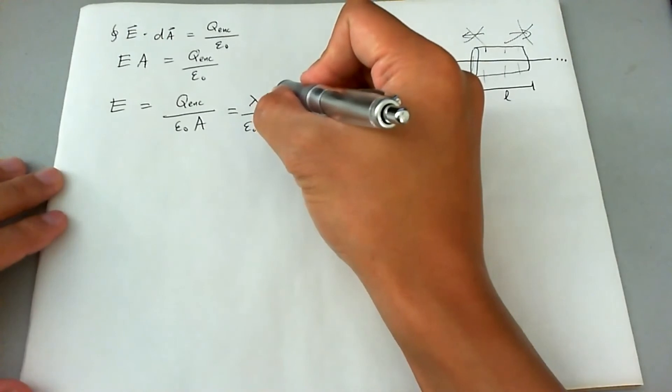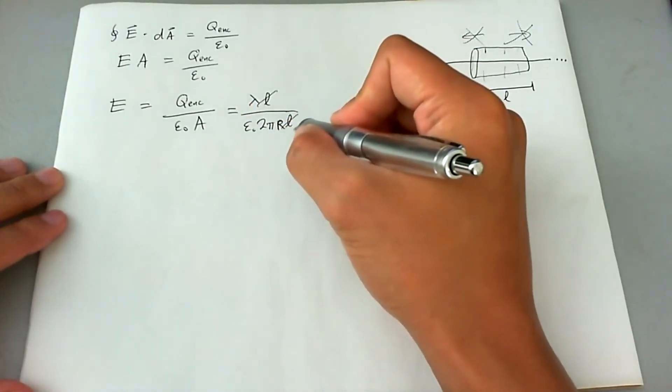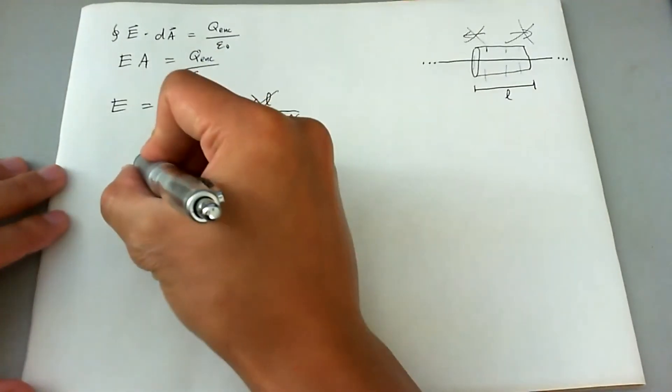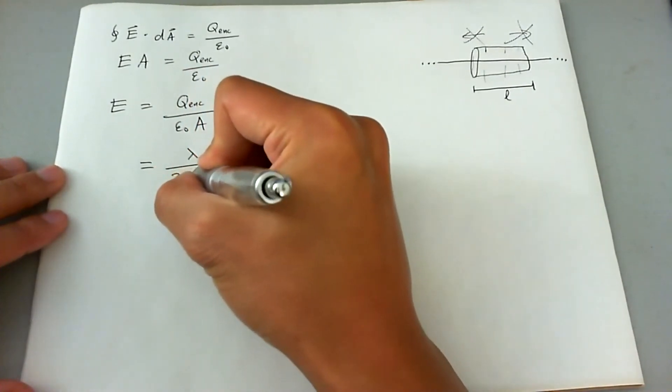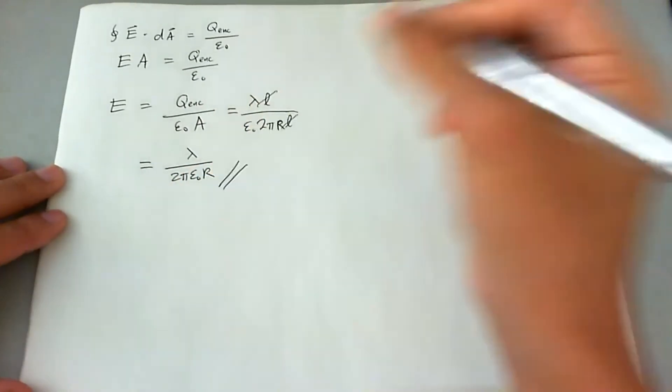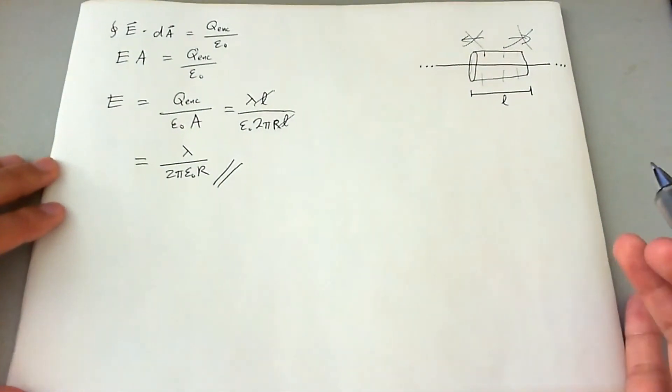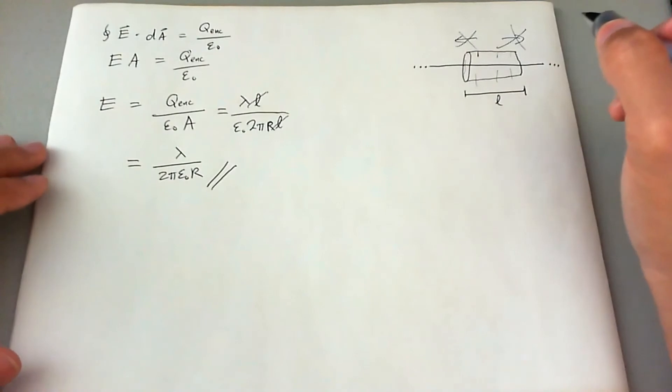So let's go ahead and cancel out what's not necessary. And luckily for us, the L's cancel out. So this ends up being lambda over 2 pi epsilon naught times r. And that's going to be our final answer. This is a relatively short little problem.